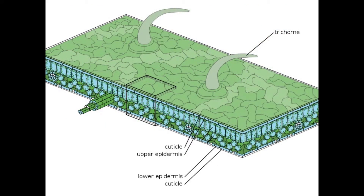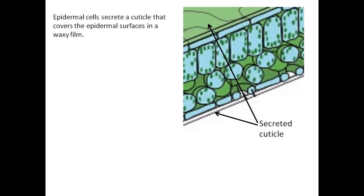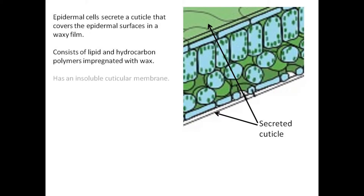The epidermis can be further specified as the upper and lower epidermis. The upper refers to the above-facing surface of the leaf, and the lower refers to the surface of the underside of the leaf. The epidermis can be as thin as one outer layer of cells, or it can be a few cell layers thick. Epidermal cells secrete a cuticle that covers the epidermal surfaces in a waxy film, consists of lipid and hydrocarbon polymers impregnated with wax, and has an insoluble cuticular membrane.